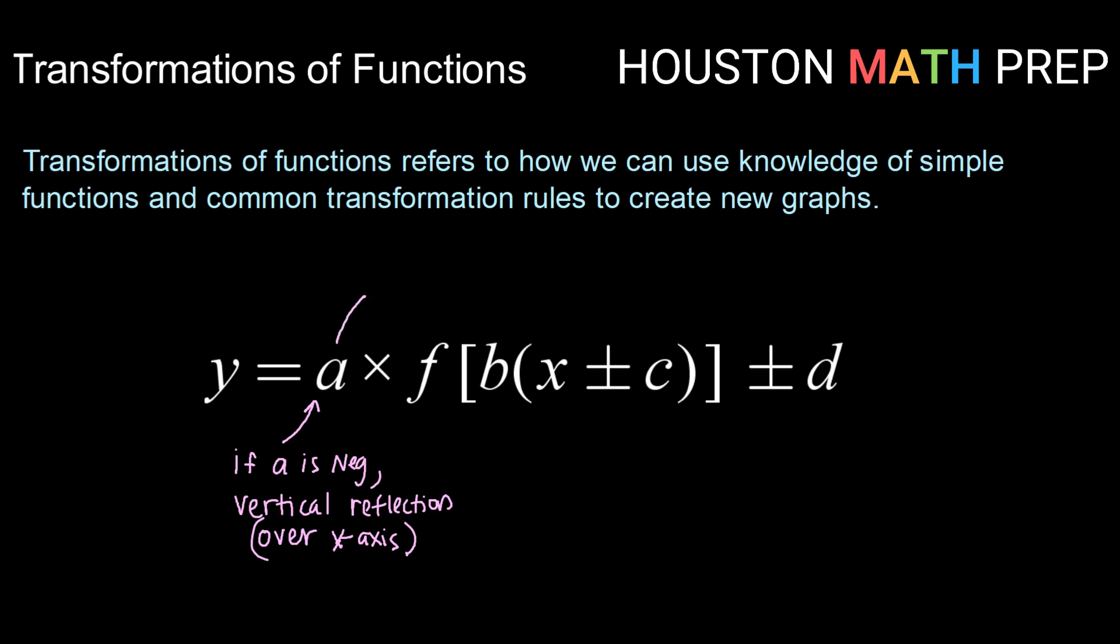Now the value of a, if a is anything greater than one, then we have a vertical expansion. That will be if the absolute value of a is greater than one. Or we can have a vertical compression if the absolute value of a is less than one.